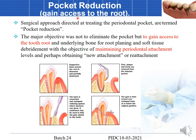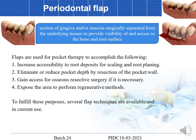A periodontal flap is a section of gingiva or mucosa that is surgically separated from the underlying bone and root to provide visibility and access to the underlying bone and root surfaces. When the flap is reflected, the underlying bone and root can be seen. This is just a section of your gingiva and mucosa separated from the tooth surface.